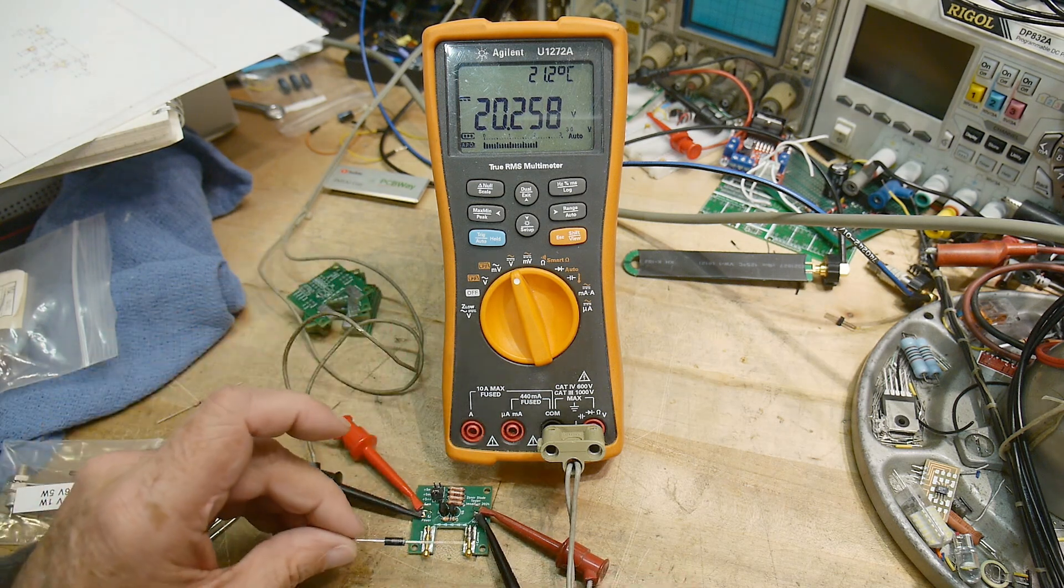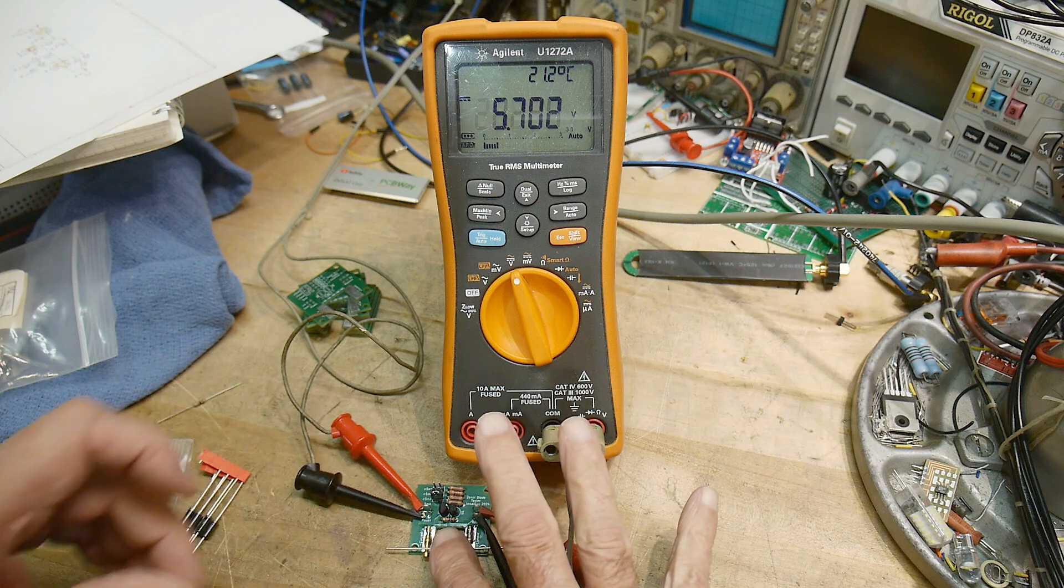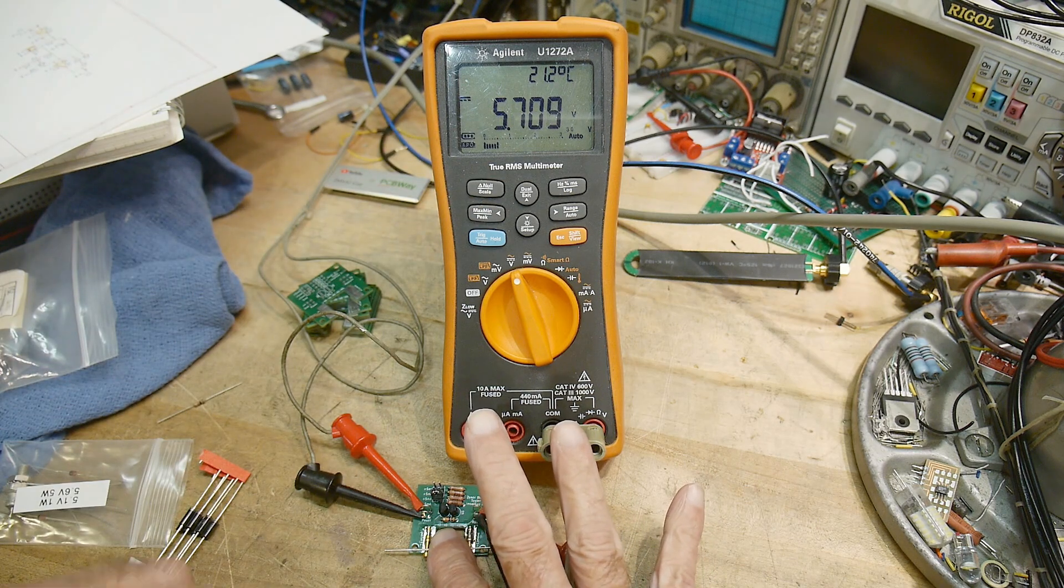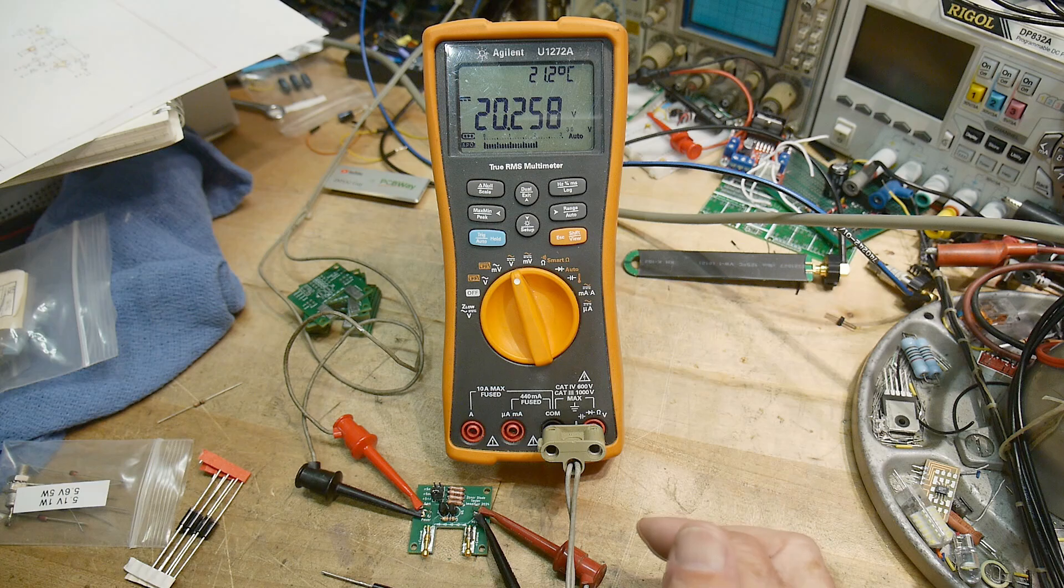Let's test this guy out here. Let's see what he is. He's a big 5 watt jobber. 5.7 volts. So there you go. It's a cute little tester.